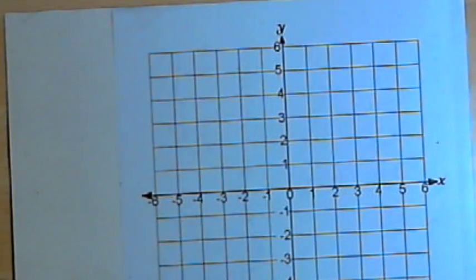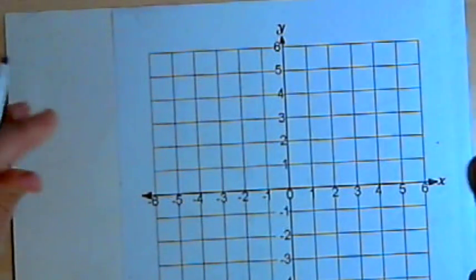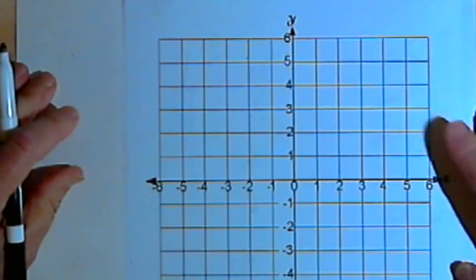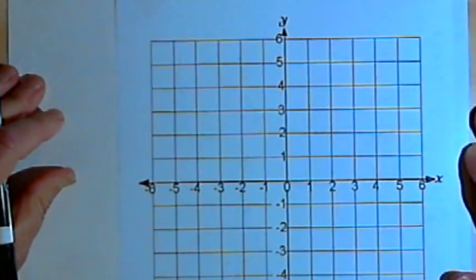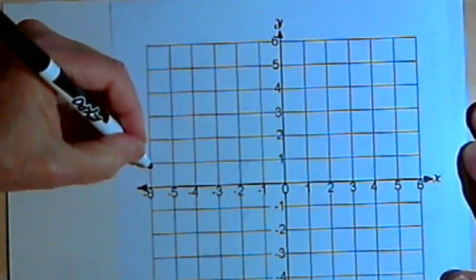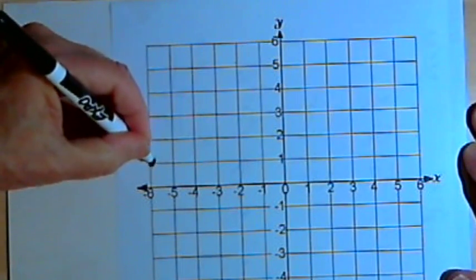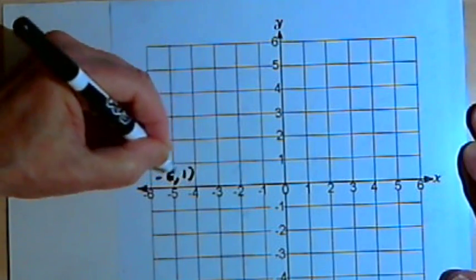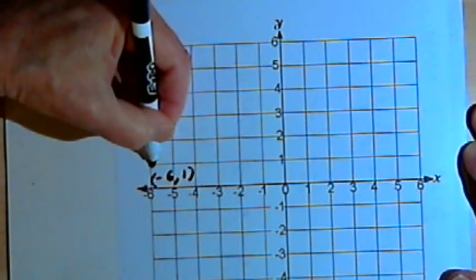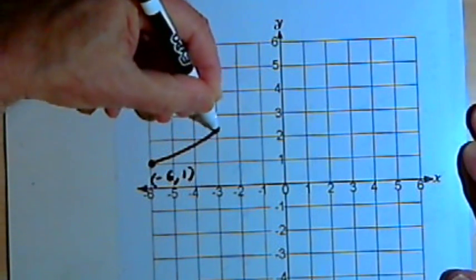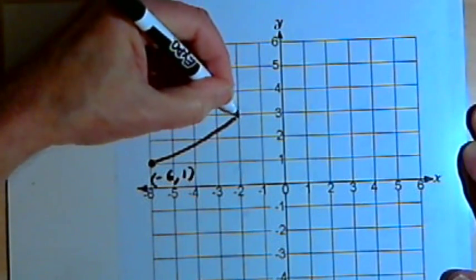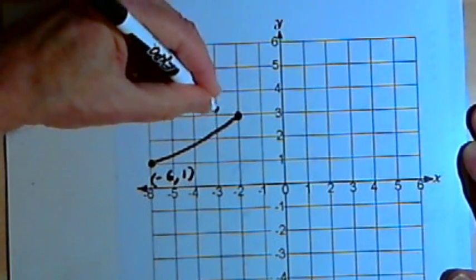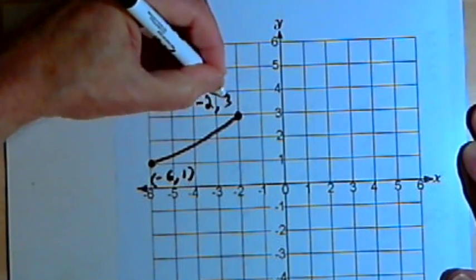Now we might have a function which is increasing over some intervals and then decreasing over other intervals and may be constant at some intervals. So we might have a function that looks something like this. We might start, let's say,